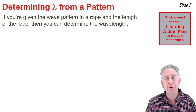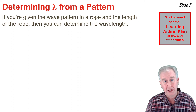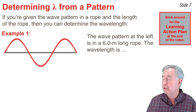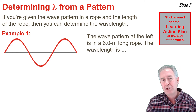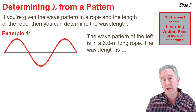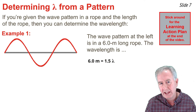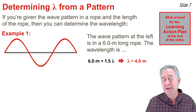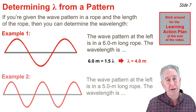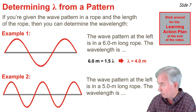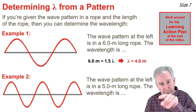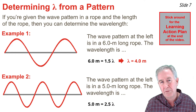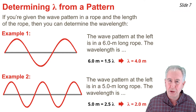Another skill is determining the wavelength from a wave pattern. In the first example, a rope is 6.0 meters long. Tracing the wave, there are 1.5 waves within it, so 6.0 m = 1.5λ. Dividing both sides by 1.5 gives a wavelength of 4.0 meters. In the second example, a 5.0 meter rope contains 2.5 wavelengths: 5.0 m = 2.5λ, giving a wavelength of 2.0 meters.